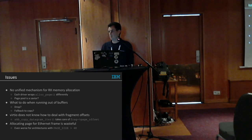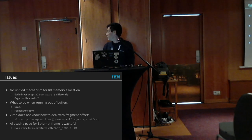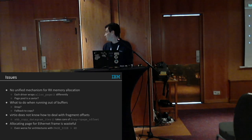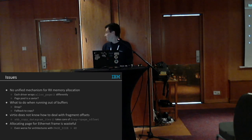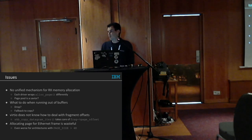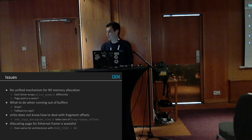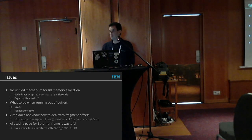There should be some mechanism to allow the virtIO protocol to handle something like a page offset for a fragment in an SKB. Additionally, allocating full 4K or page-size buffers is somewhat wasteful, especially on architectures that don't use 4K pages, such as some ARM64 chips and POWER.